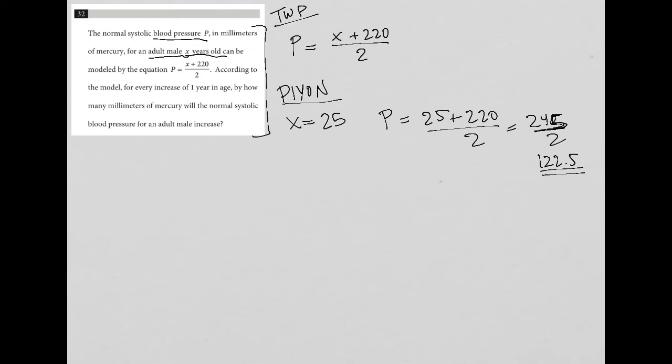But when that person gets one year older, they're now 26. So what's P when the person is 26 years old? So 26 plus 220 divided by 2. And again, I get 246 divided by 2, which is equal to 123.